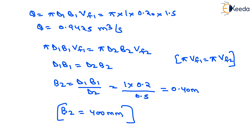So we have determined the discharge through the runner, which equals 0.9425 meter cube per second, and the width of the turbine at outlet is 400 mm. That is all about this numerical. Thank you very much, students.